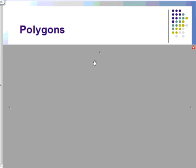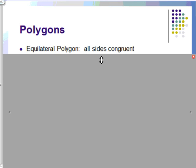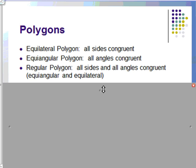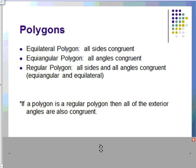There are some different classifications of polygons. There is an equilateral polygon, which means all the sides are congruent. There's an equiangular polygon, which means all the angles are congruent. And a regular polygon, which means all sides and all angles are congruent, so it's both equiangular and equilateral. This is a good point to note: if a polygon is a regular polygon, then all of the exterior angles are also congruent as well.